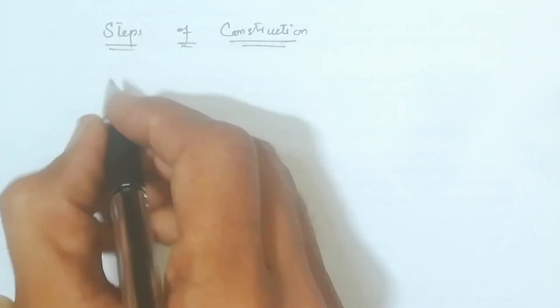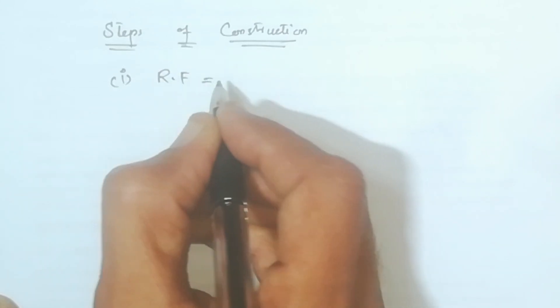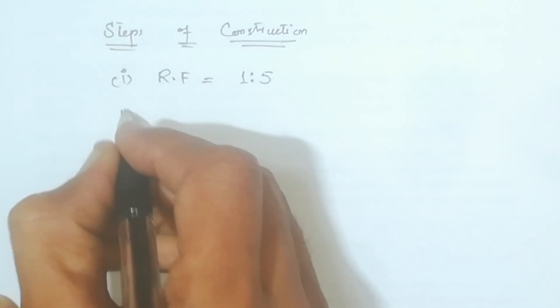So first, I will write here steps of construction. This will come to me, first number which is given, representative fraction, which is one ratio 5.